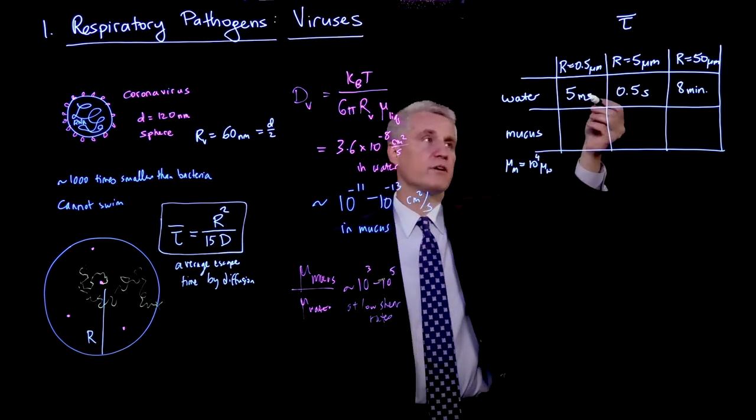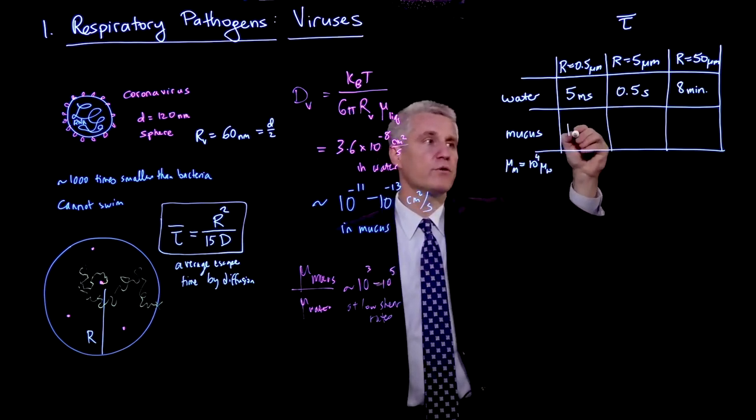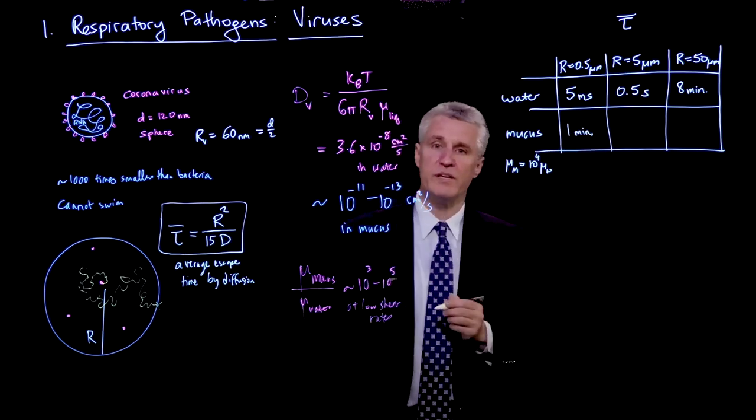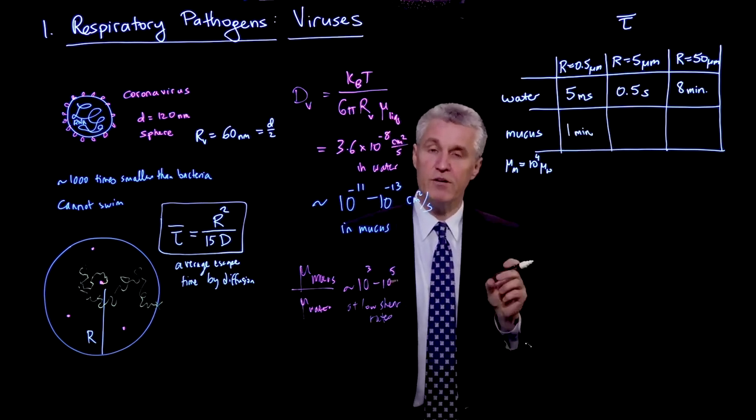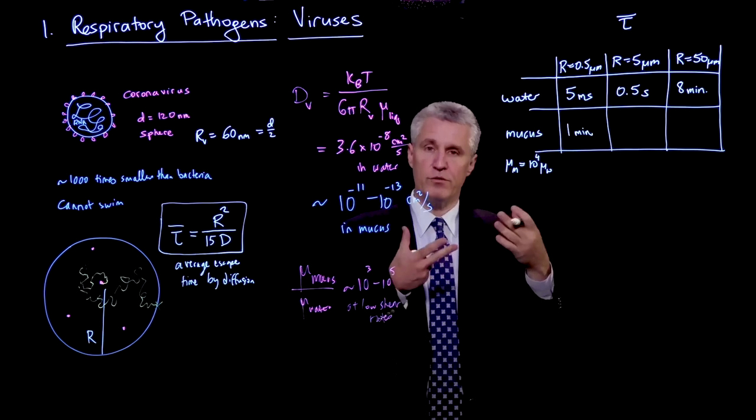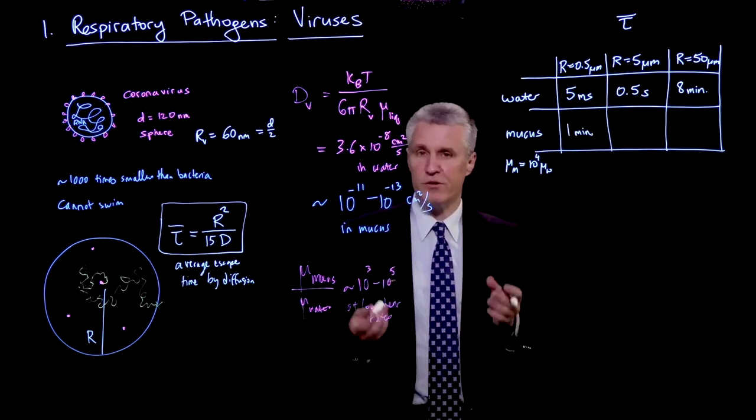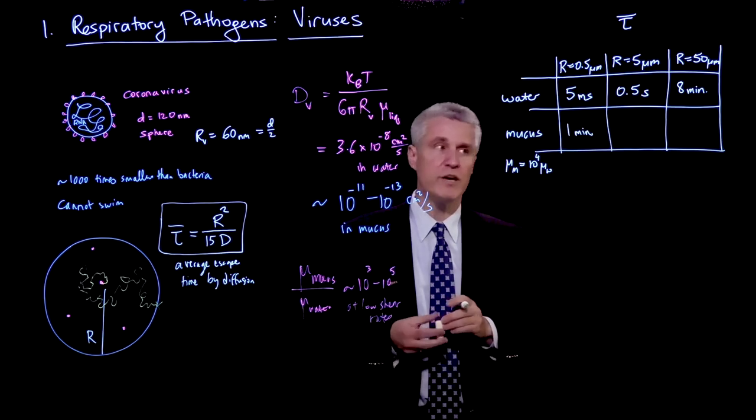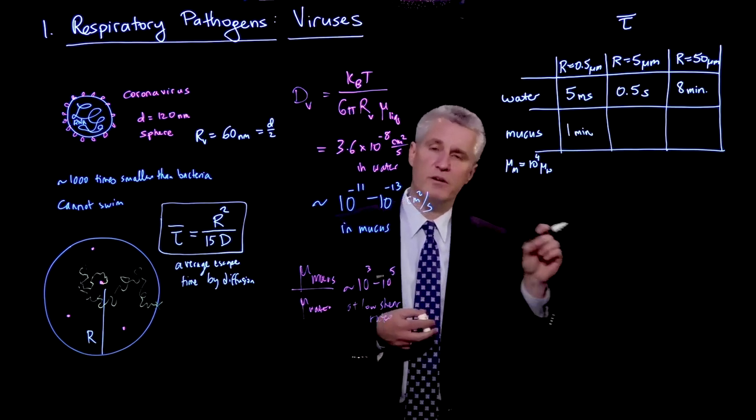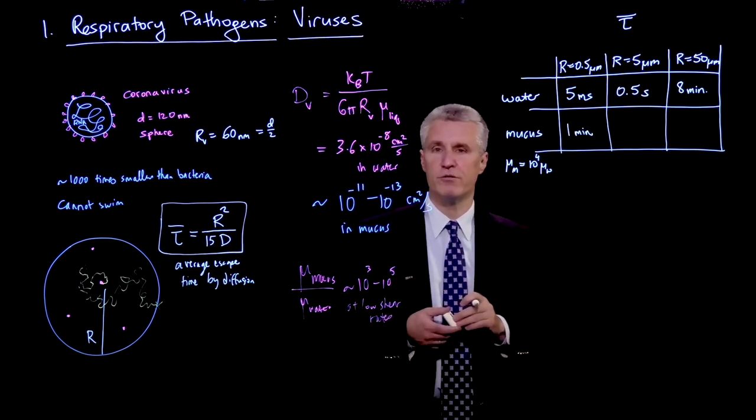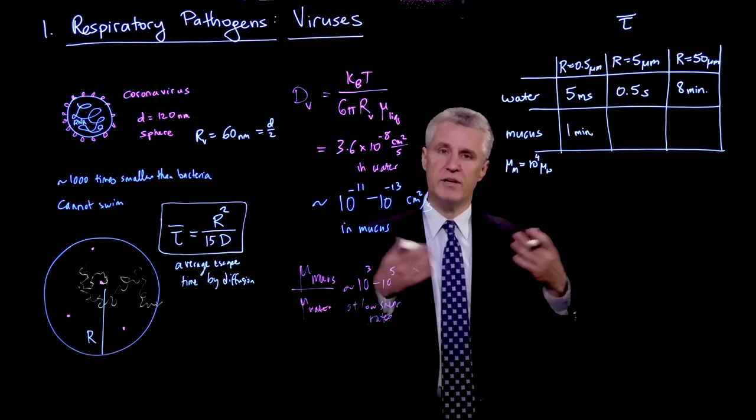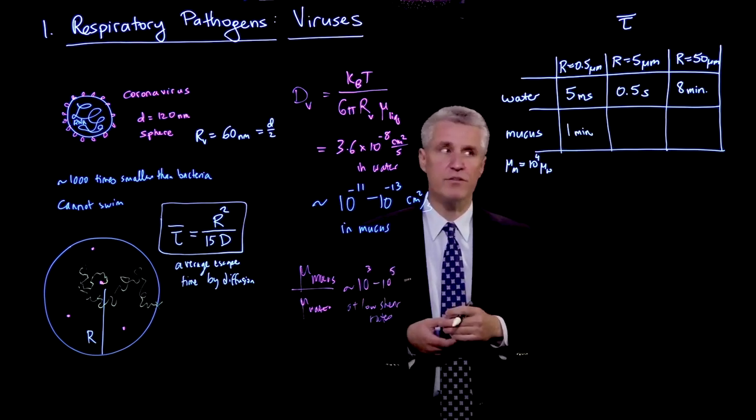And so for example, this 5 milliseconds for mucus can turn into 1 minute. So from an aerosol droplet, which is sort of at the most probable size from respiration, which is on the order of a little bit below 1 micron, a typical virion would take about a minute to diffuse out of that droplet and infect a nearby cell or tissue.